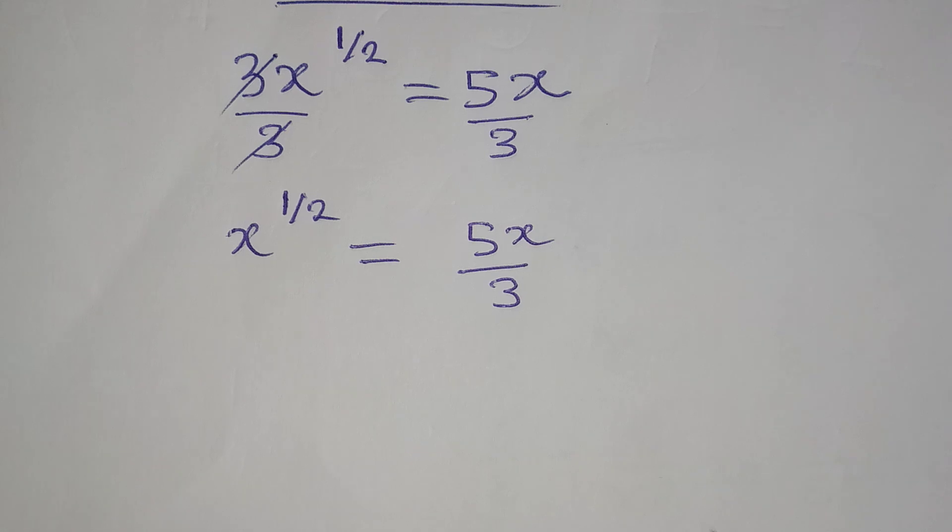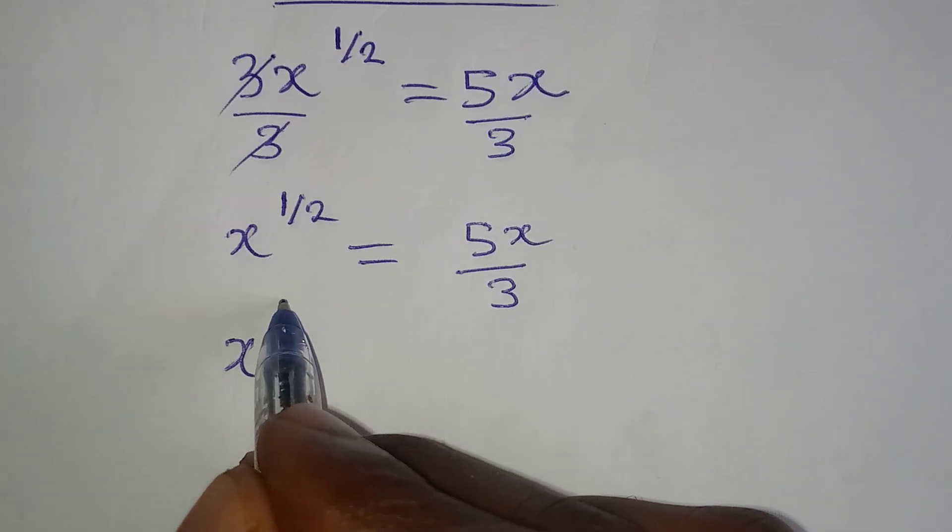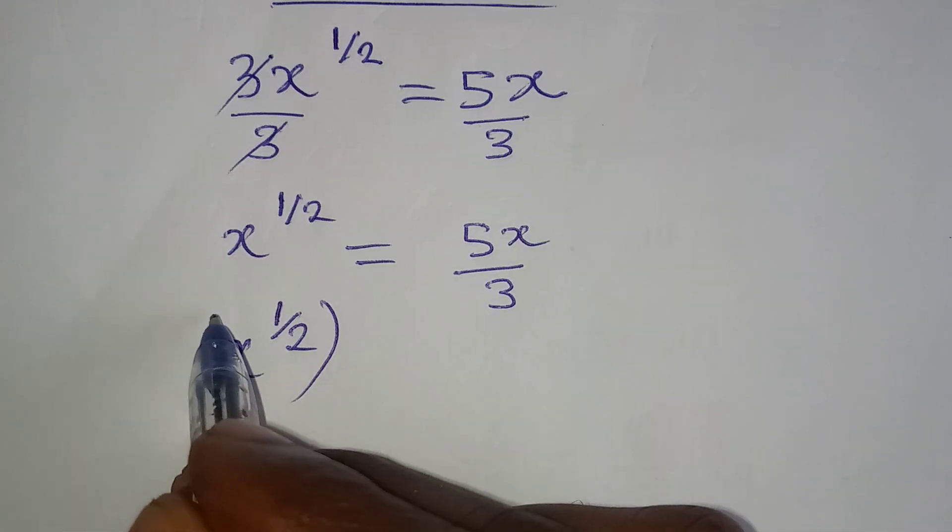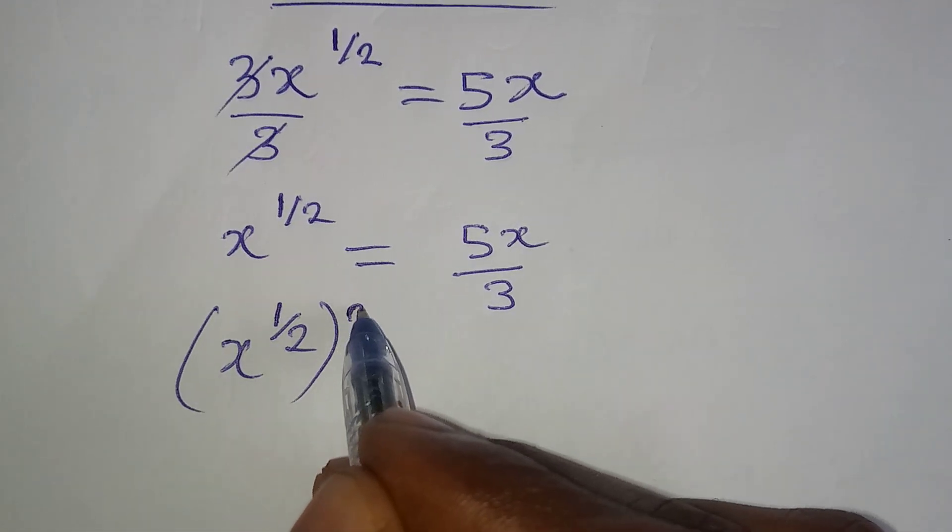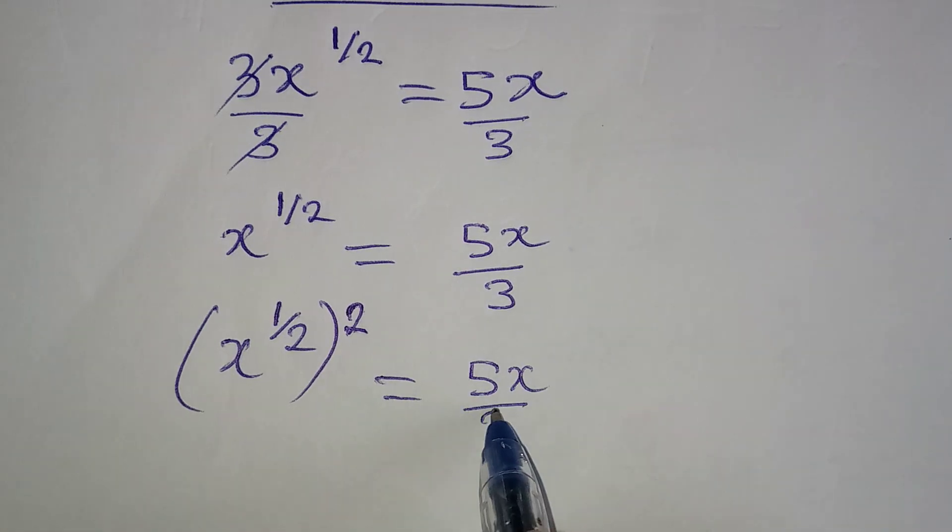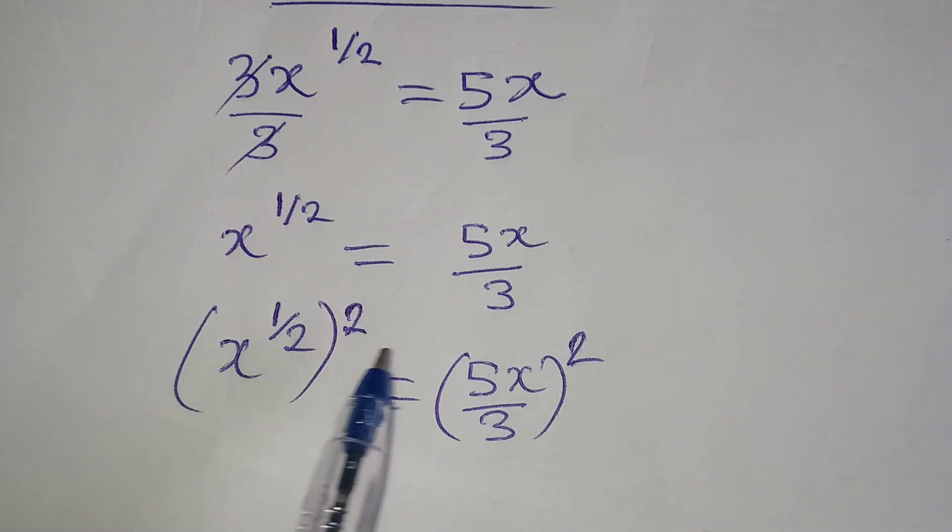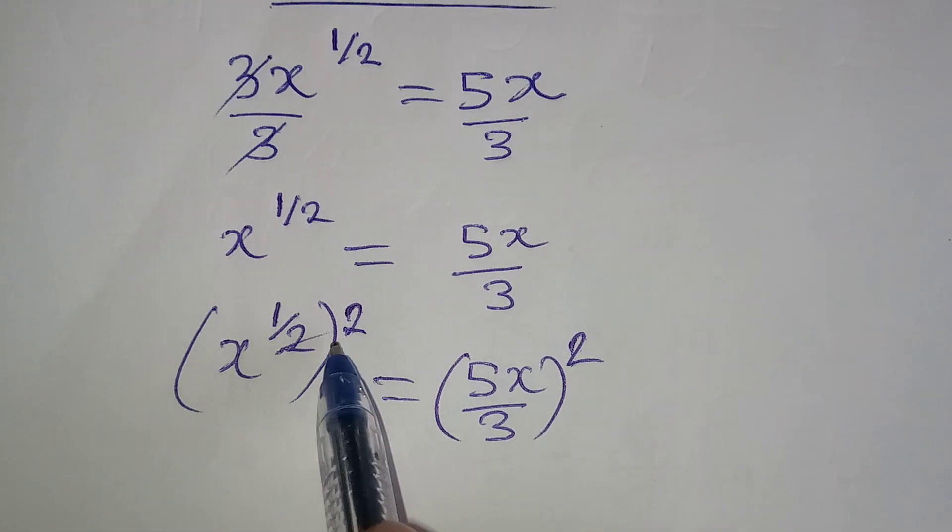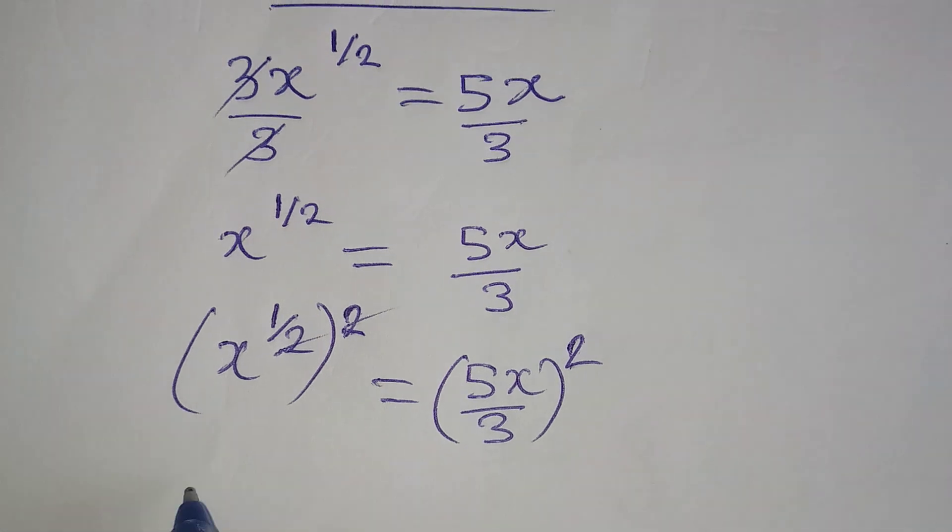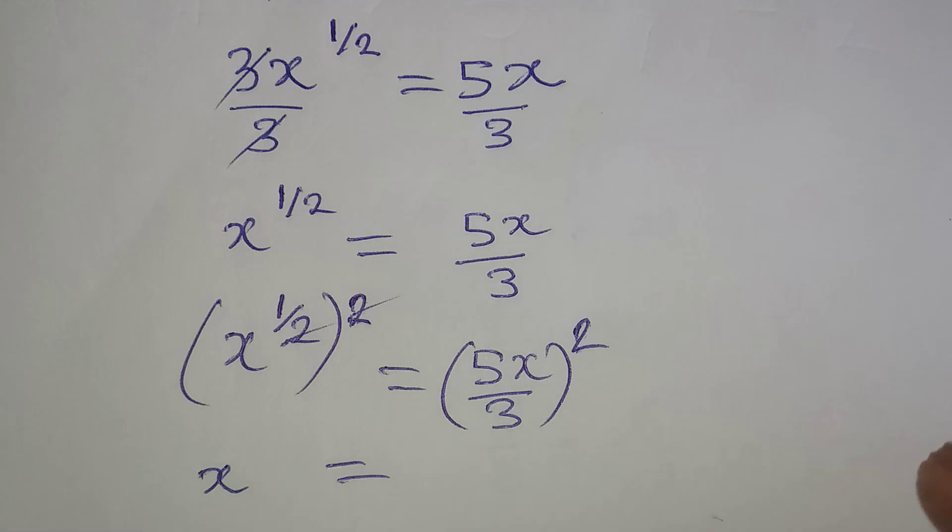So the next step is for me to remove the power of half from the left hand side by squaring this and I will also square the right hand side. Since I square the left, I must square the right. This can cancel that. And now x is free.